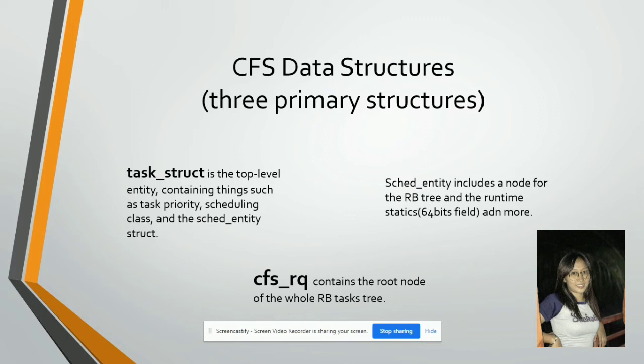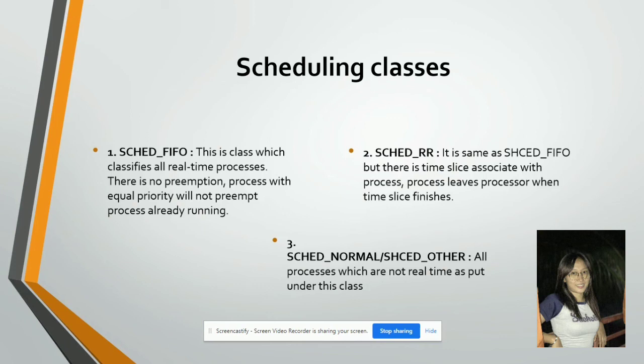CFS data structures: there are three primary structures. Number one is the task structure — it is the top-level entity containing things such as task priority, scheduling class, and the sched entity track. Number two is the sched entity — it includes a node for the red-black tree, runtime statistics, a 64-bit field, and more. The last one is CFS RQ, which contains the root node of the whole red-black task tree.